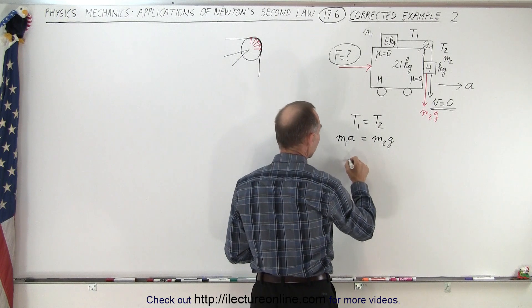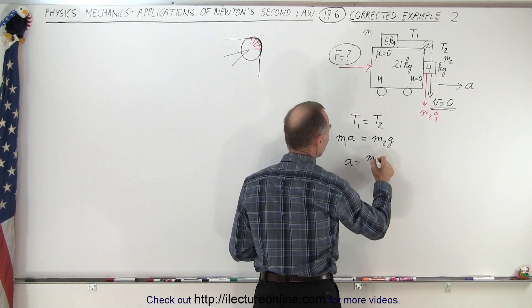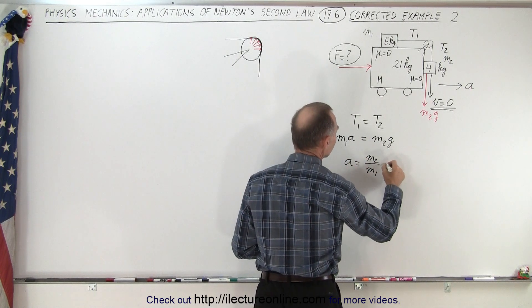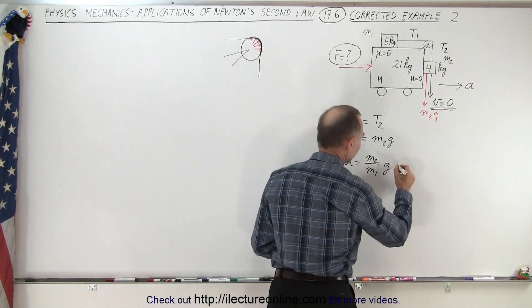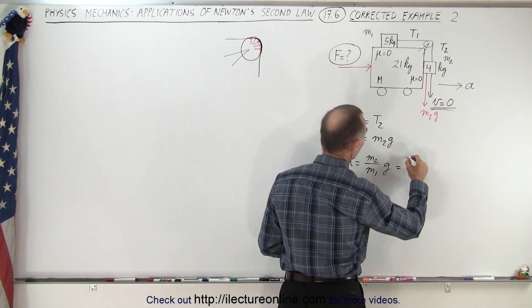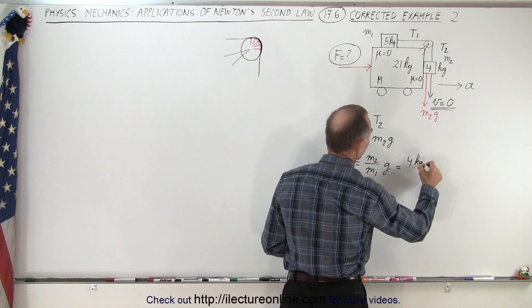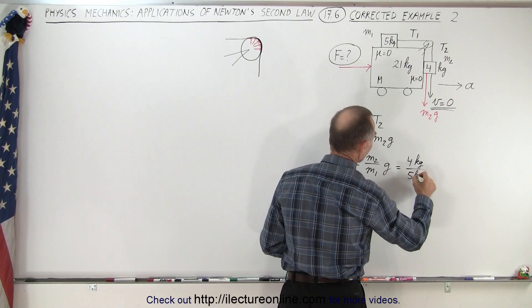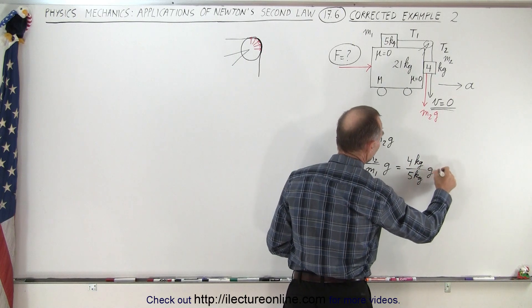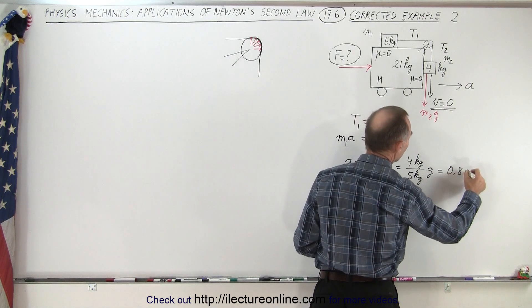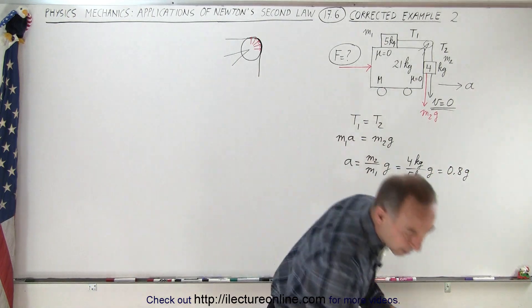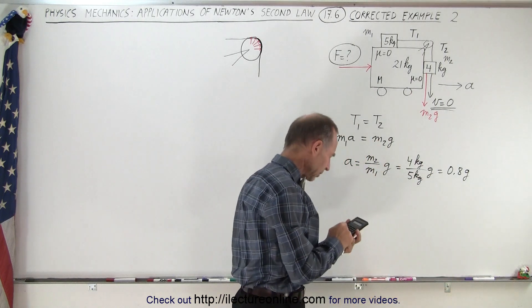Therefore, when we solve this for a, we can say that a is equal to m2 divided by m1 times g. Of course we know what these masses are: m2 is equal to 4 kilograms, m1 is equal to 5 kilograms.